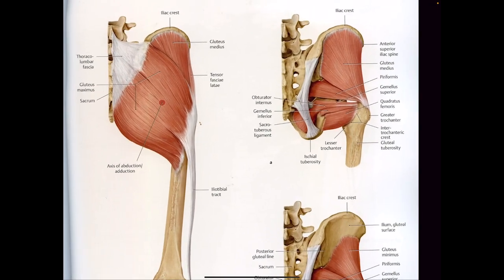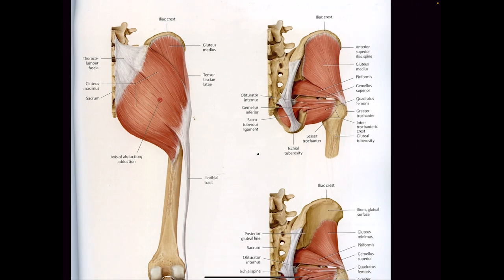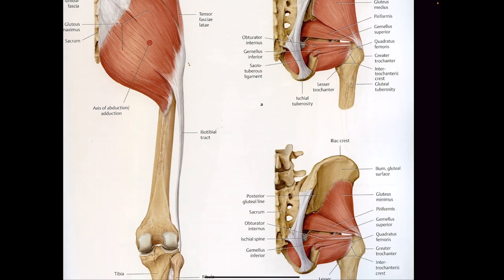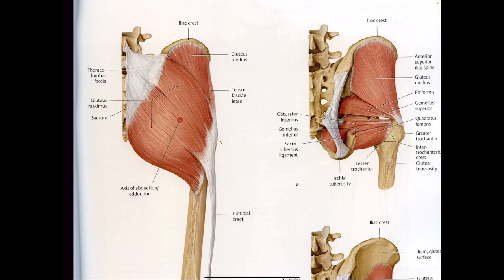The gluteus maximus is actually made up of three different sections: gluteus maximus, gluteus minimus, and gluteus medius. You see two of them — the gluteus medius and the gluteus maximus.